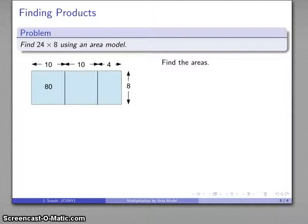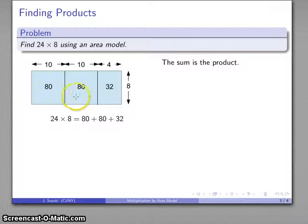And now I can calculate the areas of the individual regions. So 8 by 10, that's 80. 8 by 10, 10 by 8, that's another 80. 4 by 8, that's 32. And area is conserved. The sum of the areas is the product. So I'm going to add 80 plus 80 plus 32, and that's going to be the same as the product 24 by 8. And that works out to be 192.